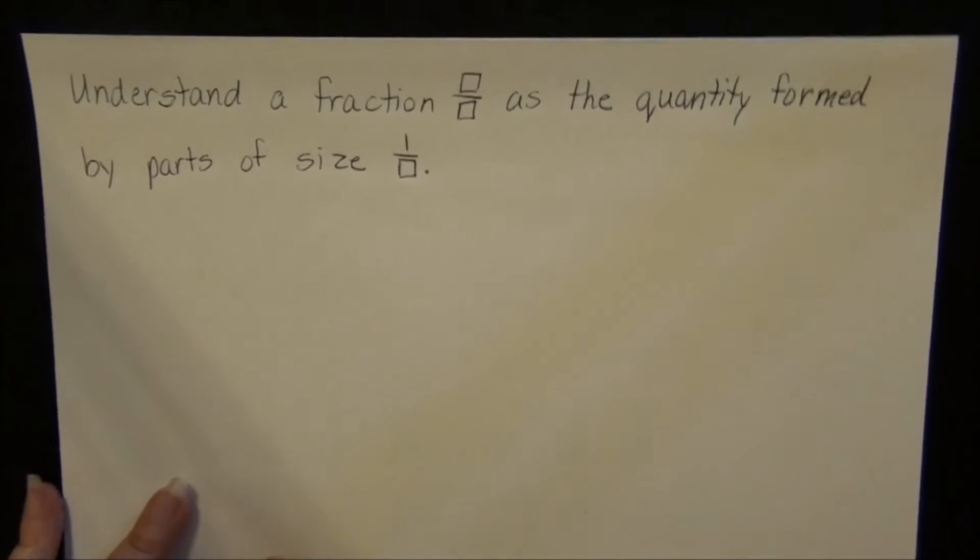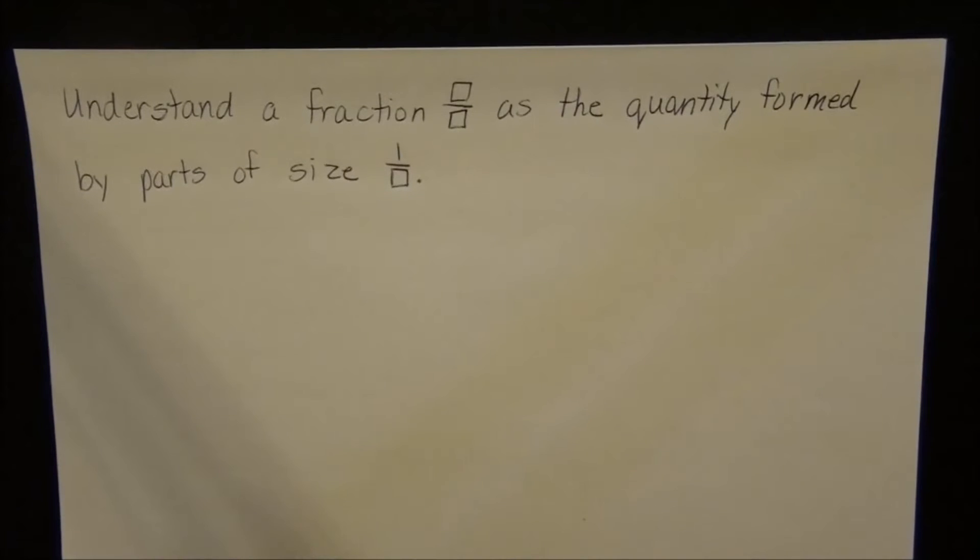So today's lesson, our objective is to understand a fraction, blank over blank, as the quantity formed by the parts of size 1 over blank. Just like yesterday, I'm going to help you understand what this objective means, and then I will show you how it works in the real world.